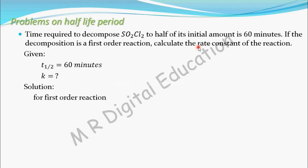For first-order reaction, you know that T half equals 0.693 divided by K. Now, you have to find this value of K. So, take this K to this side and T half to this side. So, K equals 0.693 divided by T half.